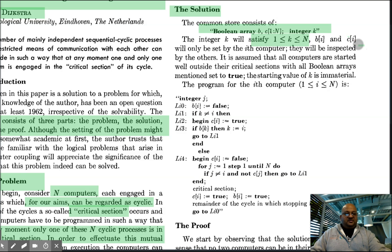The way the solution is set up, B of I and C of I are only ever written by the ith computer. They can be read by all the processes, but they're written only by the ith process. The initial value of K doesn't matter, but we start by assuming that the Boolean arrays B and C are all set to true.